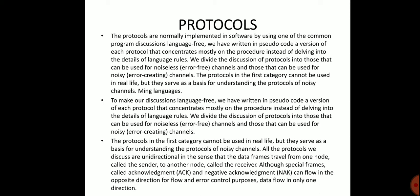All the protocols we discuss are unidirectional, in the sense that the data frames travel from one node — called the sender — to another — called the receiver. Special frames called acknowledgements and negative acknowledgements can flow in the opposite direction for flow and error control purposes. So the data link layer carries data in only one direction, from the sender to the receiver.